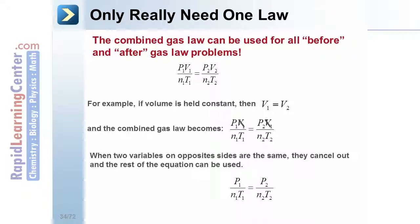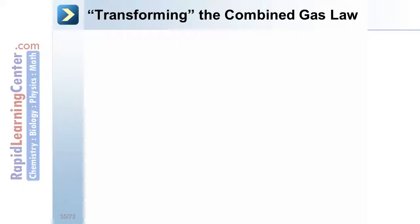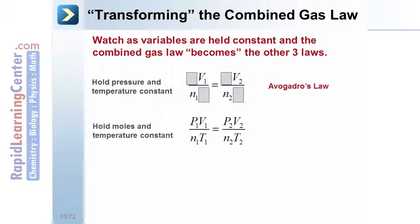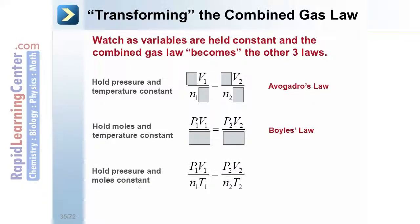Therefore, the equation would be written this way. Anything that's held constant can simply be taken out of the equation. Watch as the combined gas law becomes each of the other three gas laws. If you hold pressure and temperature constant, you arrive at Avogadro's law. By holding moles and temperature constant, you see Boyle's law. And finally, by holding pressure and moles constant, you arrive at Charles law.